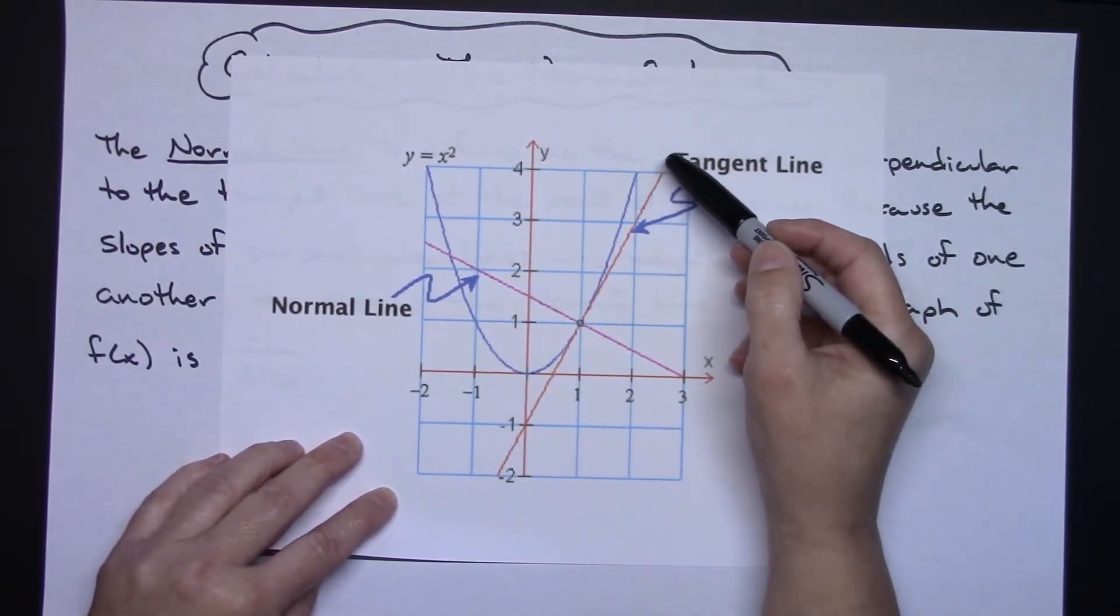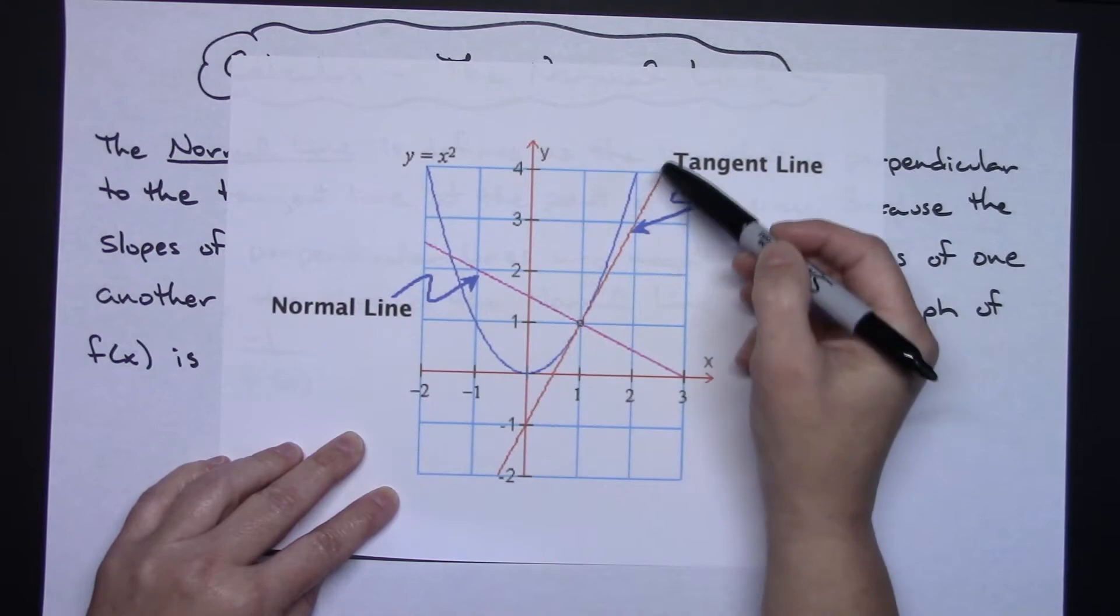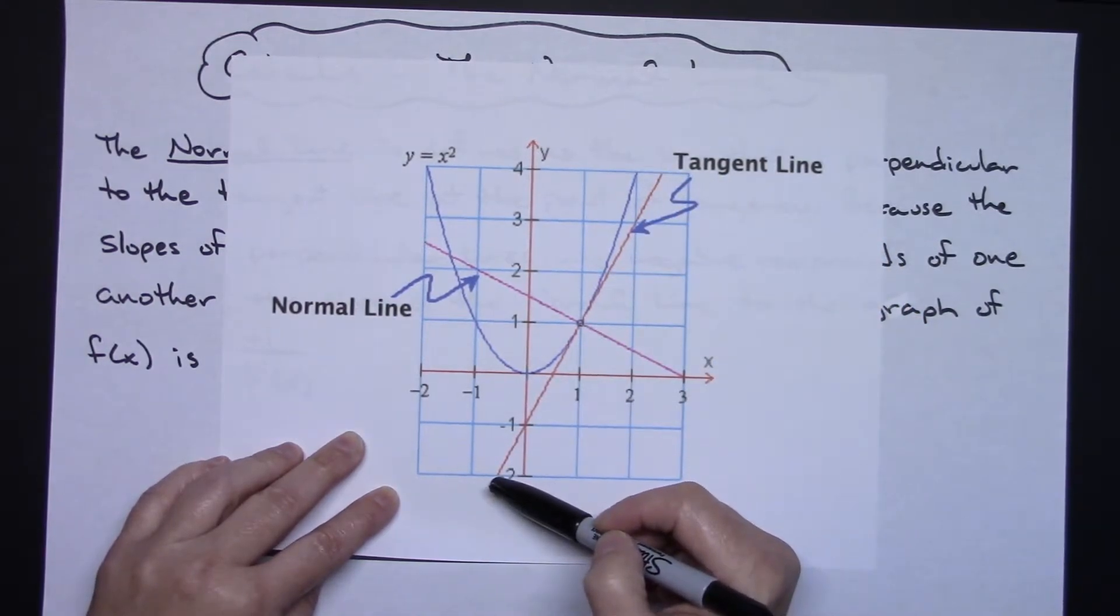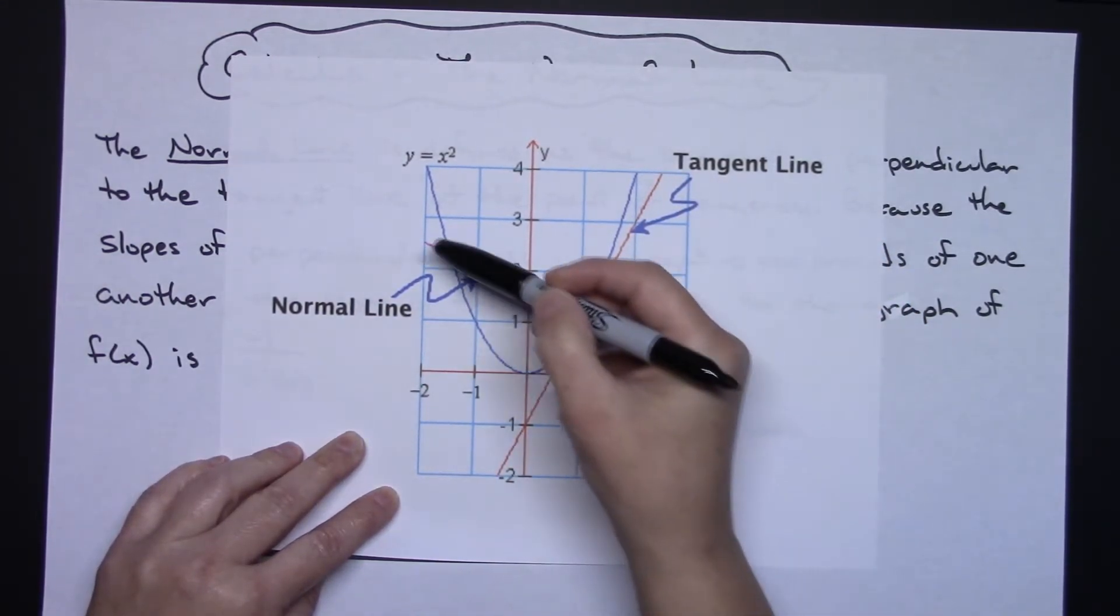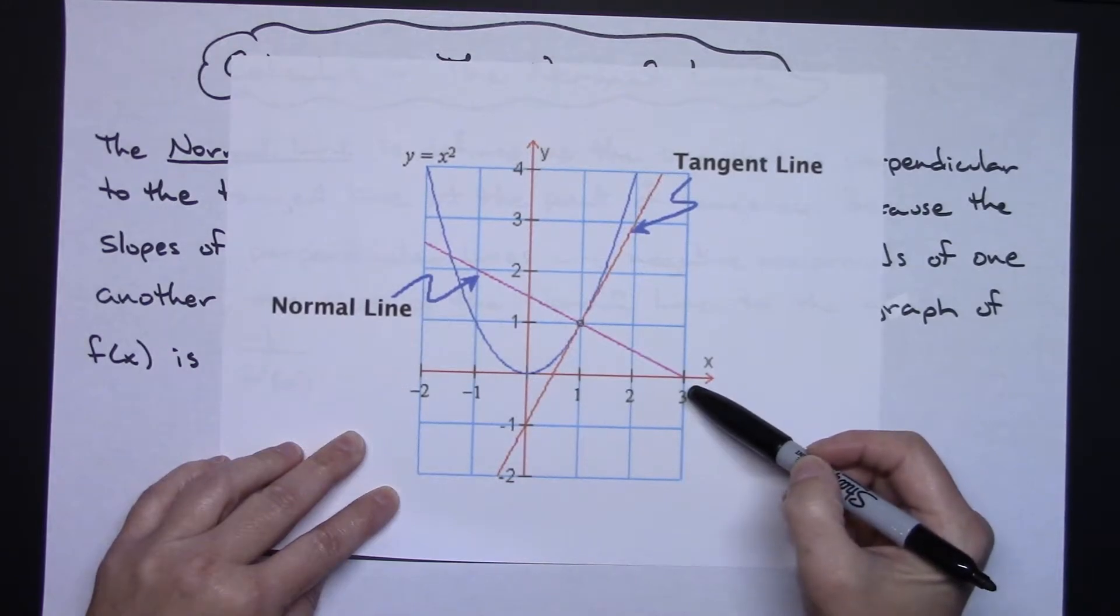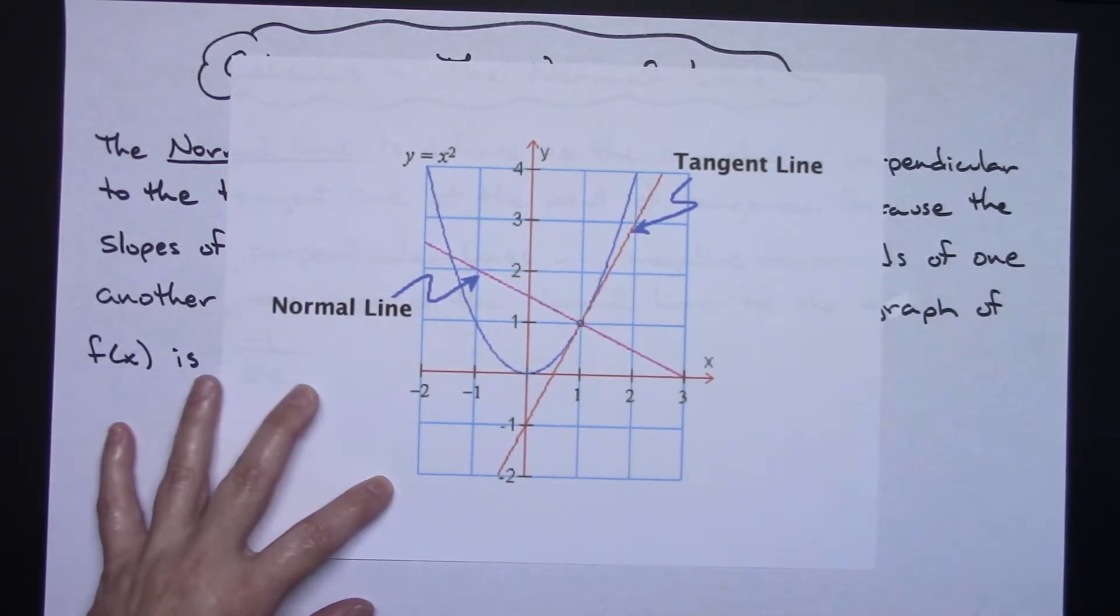So you can real easily, if you know the equation of that tangent line, you know the slope of that tangent line, and a point on the line, then you can write the equation of the normal line very easily. That's the example that we're going to be taking a look at.